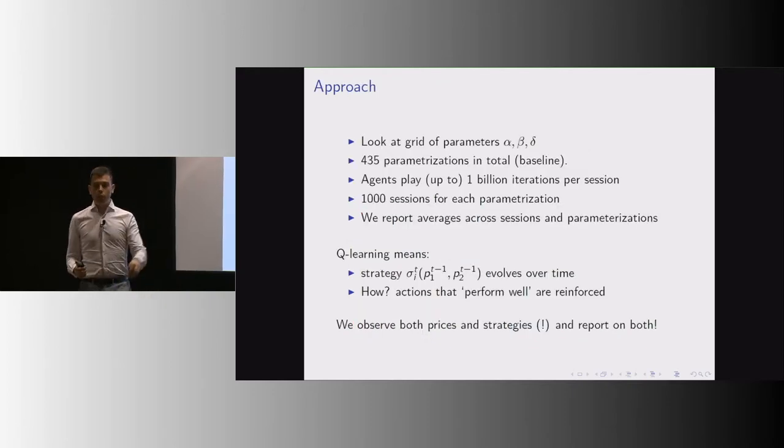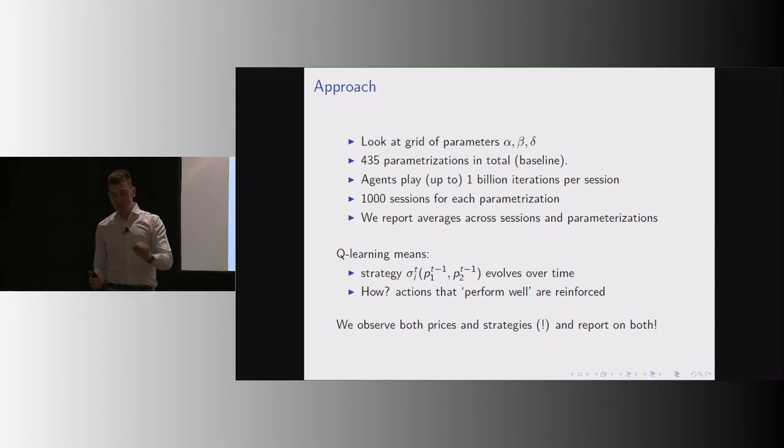Our approach is we're looking at a grid of alpha, beta, deltas. For each point on this grid, we're going to run 1,000 sessions, and one session is two Q-learning algorithms starting with no knowledge and playing for a long time. I'm going to report results which are averaged across sessions and sometimes across the grid.